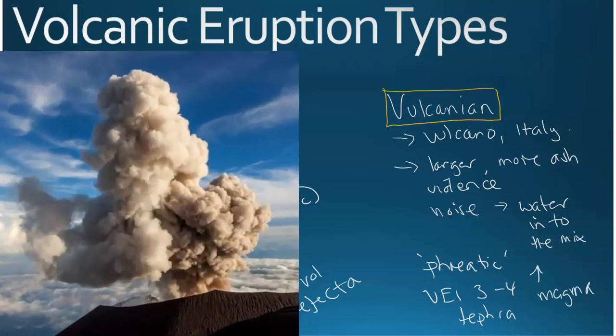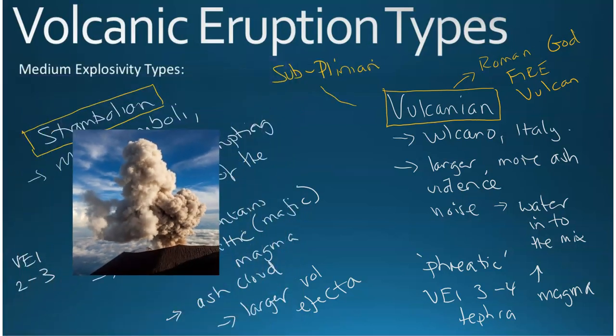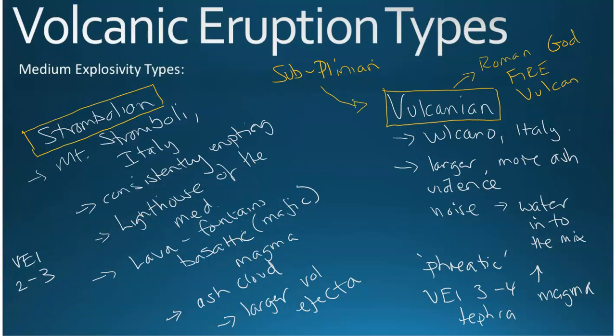Vulcanian also comes as named from the Roman god of fire, and you can add in here some Sub-Plinian eruption types, but they are definitely more on the Vulcanian side and the higher explosive side than Strombolian, but larger ash clouds and tephra.